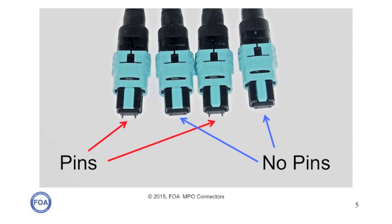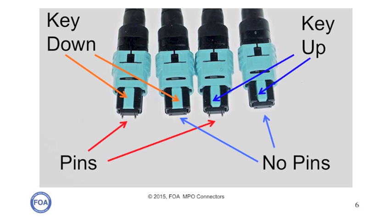The problem you have with most of these connectors is all of the variations in the connectors. As you can see, there are four varieties shown here. First of all, there are connectors that have pins, and there are connectors that have no pins or holes, and those two can be mated to each other to align the fibers using the pins. The second option is the key — the key can be on the top or the bottom, what we call key up or key down, and the keys determine which way the connectors mate. So the pins do the alignment, the keys do the mating.